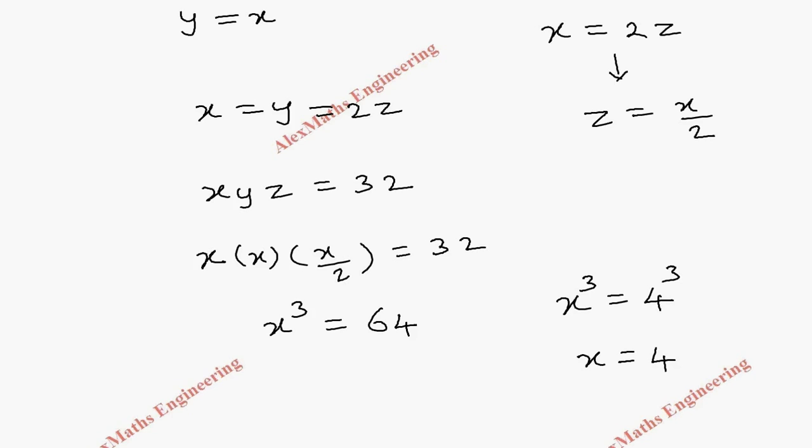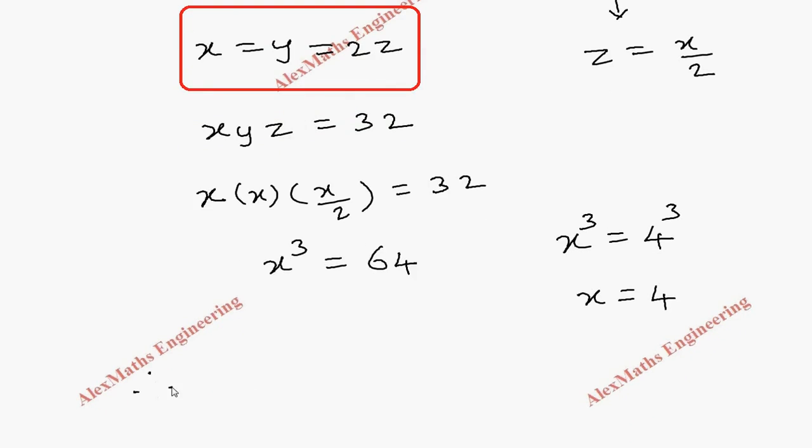Now using this condition, we can get the other two values. So we know x is 4. Therefore x = 4. If x is 4, x and y are equal, so y is also 4. Now if I substitute x as 4 here, then 4/2 will be 2. That is the value of z, which is 2.